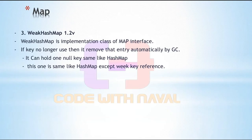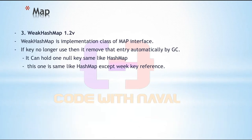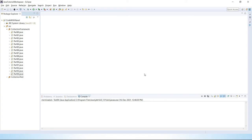WeakHashMap is an implementation class of the Map interface, introduced in version 1.2. If a key is no longer used, then it removes that entry automatically by garbage collection. It can hold one null key and multiple null values, same as a HashMap, except for the weak key reference. So what is the weak key reference? Let's see — I'll show you practically.